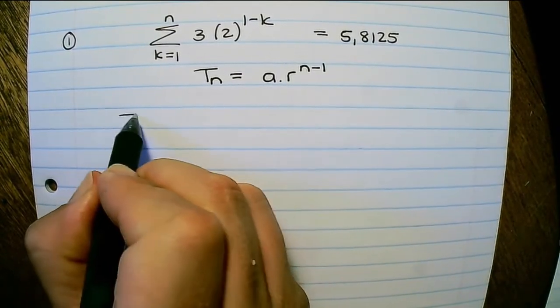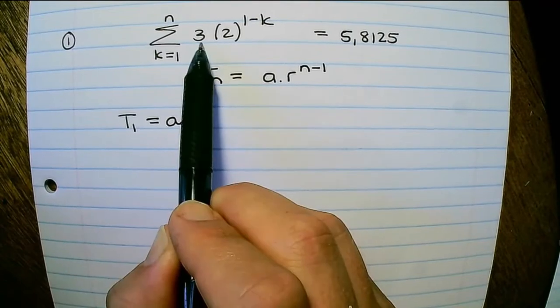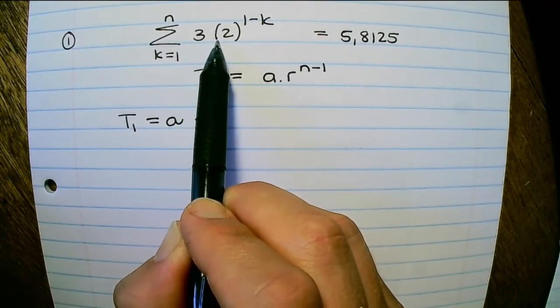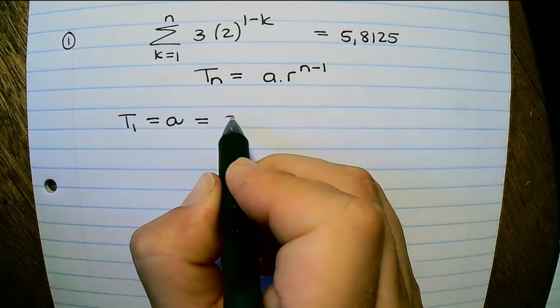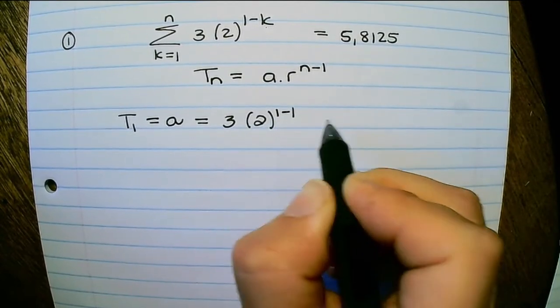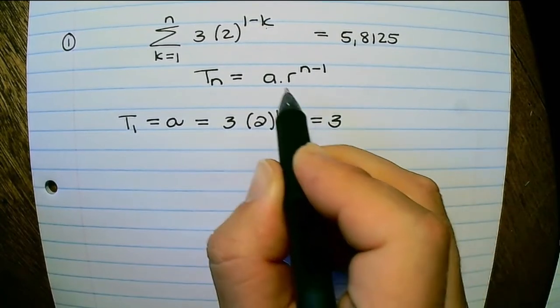So let us find term 1, which will be equal to a. What I need to do to find the first term is substitute k with 1. So it is 3 times 2 to the power of 1 minus 1, and that is equal to 3. So our a value is equal to 3.